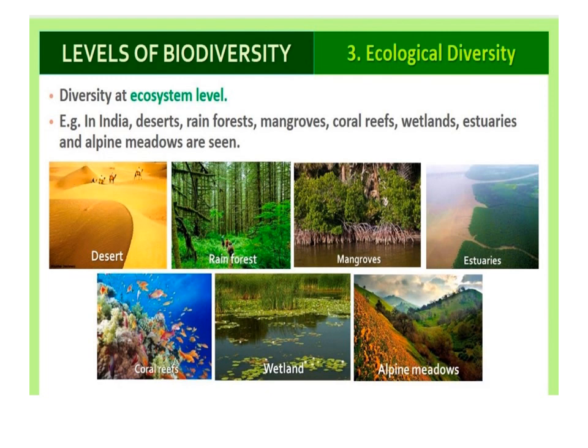Ecological diversity is the variety in the type of ecosystem in a region. For example, India with its deserts, rainforests, mangroves, coral reefs, wetlands, estuaries, and alpine meadows has a greater ecosystem diversity than Scandinavian countries like Norway. It has taken millions of years of evolution to develop this rich diversity in nature. We could lose all that wealth in less than 2 centuries if the present rate of species loss continues. Biodiversity and its conservation are now vital environmental issues for our survival and well-being of this planet.